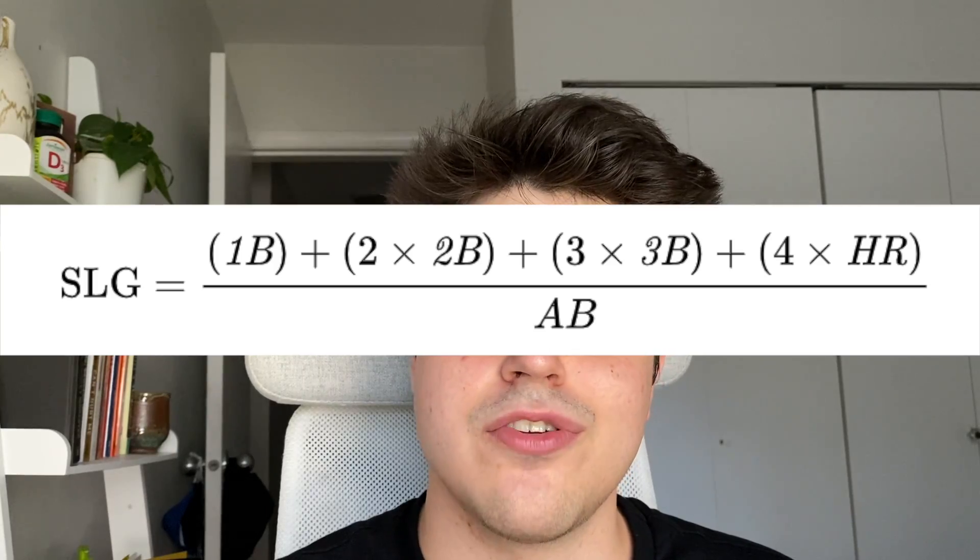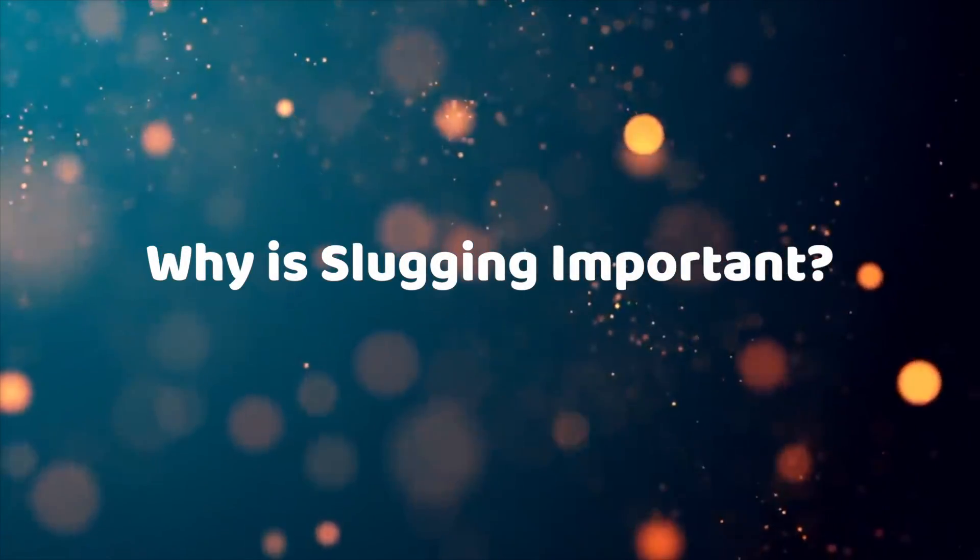How is this different from batting average? Because slugging gives more weight to doubles, triples, and home runs. And how does it differ from on-base percentage? It does not take into account any walks or hit by pitches, and it gives more weight to hitting for extra bases like doubles, triples, and home runs. Why is slugging important? Because it measures how good a batter can hit the ball and how often a player can hit for extra bases. When you hit for extra bases, you have a better chance of scoring runs for your team.